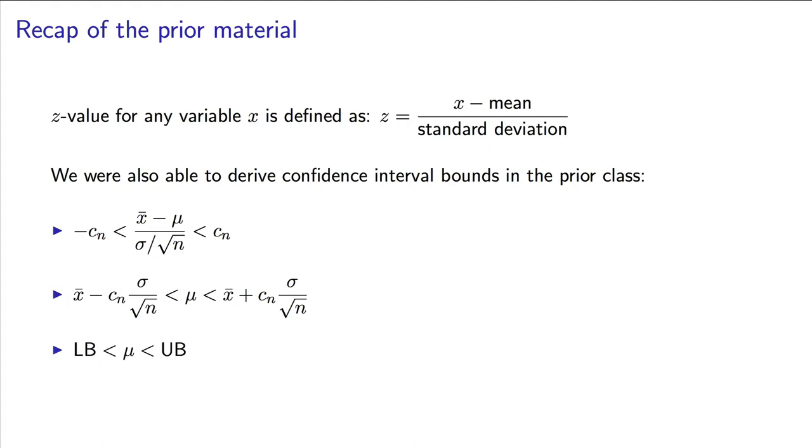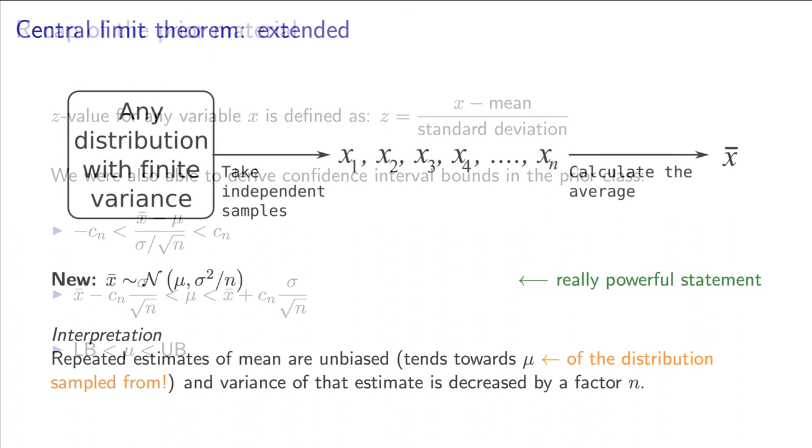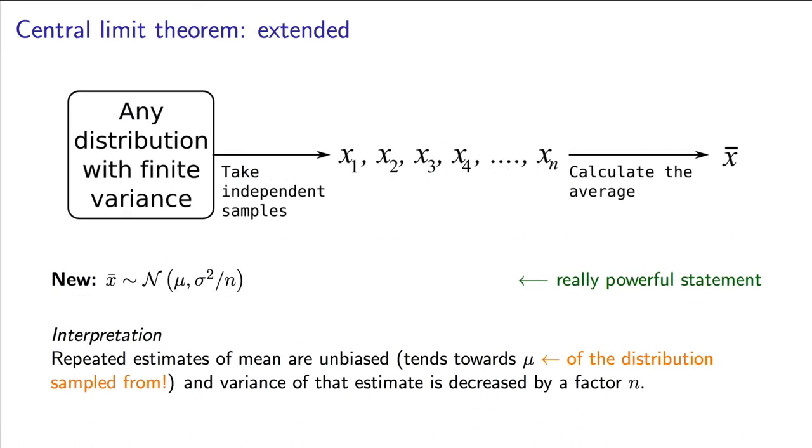In the prior video, we left our derivation by learning something new about the central limit theorem. We learned that the mean that we calculate from our independent samples is also from a normal distribution, with the same mean as the original sample data. The other interesting thing that we learned is that the calculated average has the same variance as the raw sample data, but divided by a factor of n.